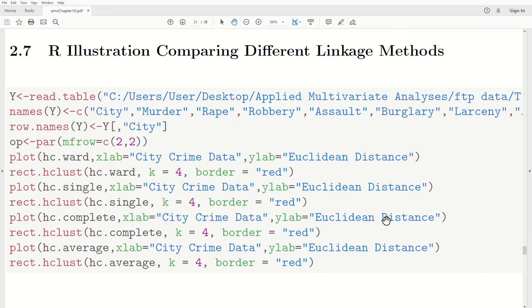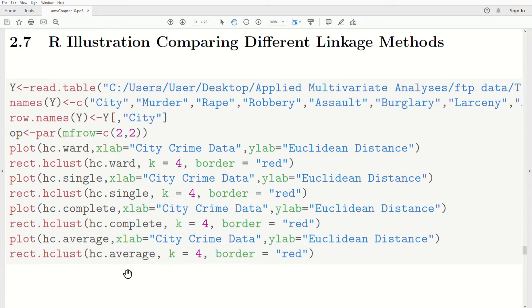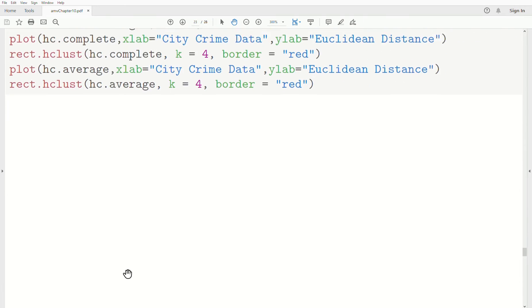We're going to compare Ward's method, the single linkage, which is nearest neighbor, the complete linkage, which is the farthest neighbor, and the average methods. And we're just going to create little clusters of four in each of these just to see the differences.